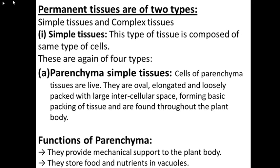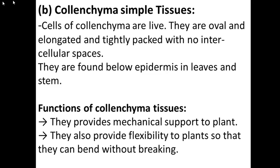The functions of parenchyma tissues: since they are present throughout the body of the plant in all the soft parts, the main function is that they provide mechanical support to the plant body. They also store food, nutrients, and water. Those are the functions of parenchyma simple tissues.